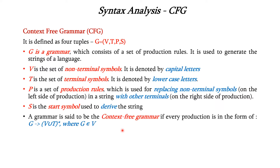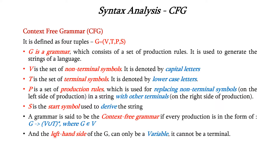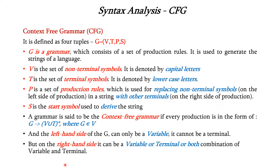S is the start symbol which is used to derive the given string. A grammar is said to be a context-free grammar if every production is in the form G → (V ∪ T)*, where G belongs to V. The left-hand side of the grammar can only be a variable — it cannot be a terminal. But the right side can be a variable, a terminal, or a combination of both, that is (V ∪ T)*. This is the formal definition of context-free grammar.